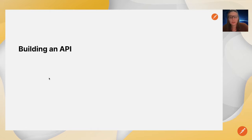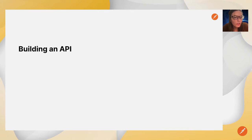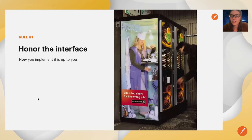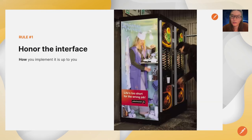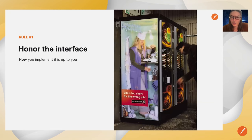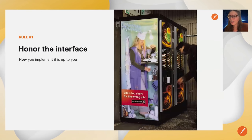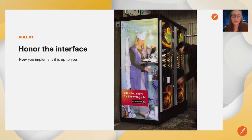So how do we actually build an API? There's only one rule you really have to keep in mind, and that is to honor the interface — what you've defined in the schema. Over here you see a picture of a vending machine. To the user, they only care that if they put a quarter in, they're going to get coffee out. They don't care what's happening on the other side. As long as you're honoring that contract defined in your API schema, the user is going to be happy.